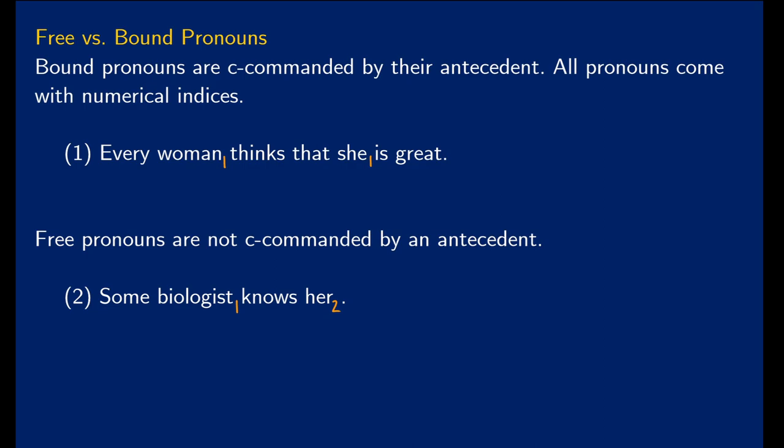Bound pronouns are C-commanded by their antecedents. So in the case of every woman thinks that she is great, she and every woman refer to the same thing. So these are given the same index of one. These numbers will be important because they're going to behave the same way as traces do in terms of replacement. When we do T₁ or whatever now pointing to D, this is going to mean that every woman is D and then she is also D.